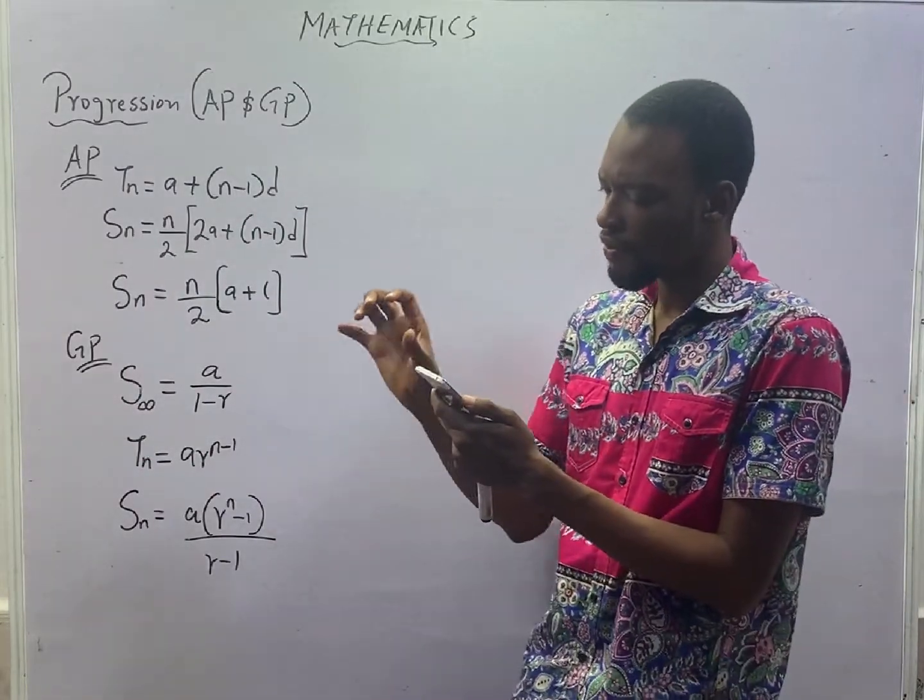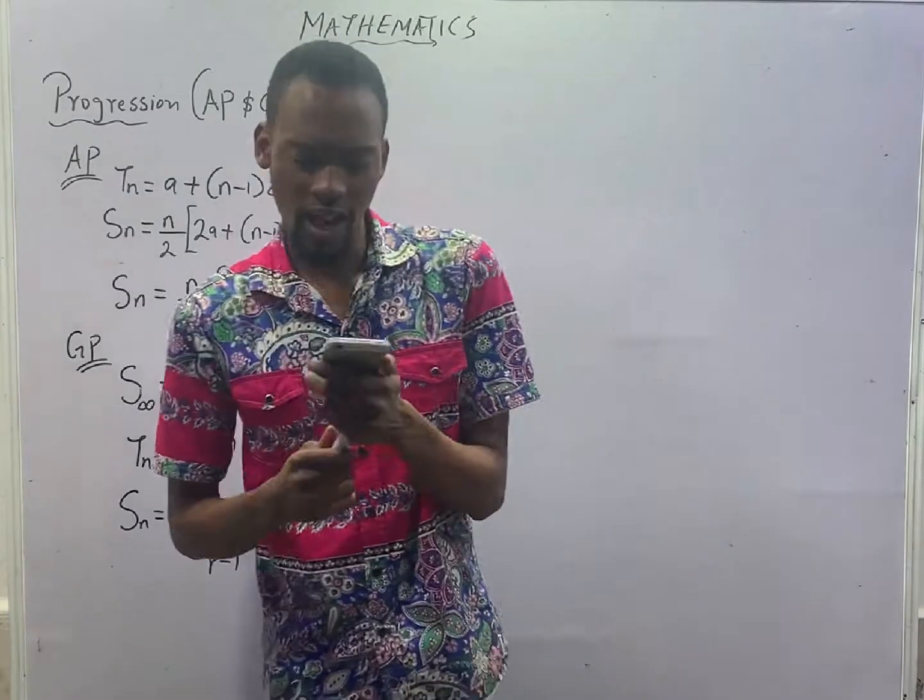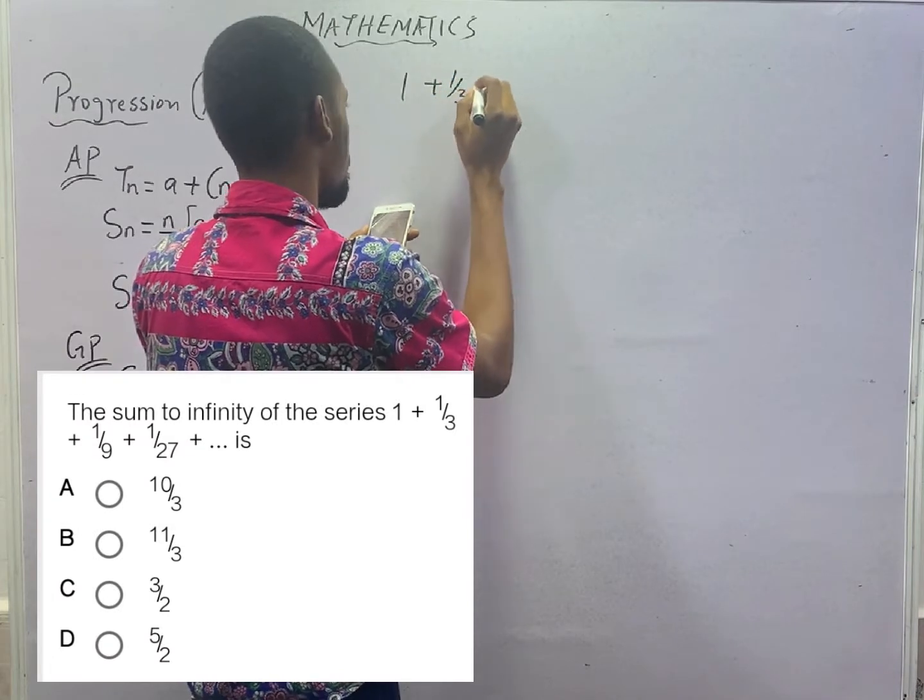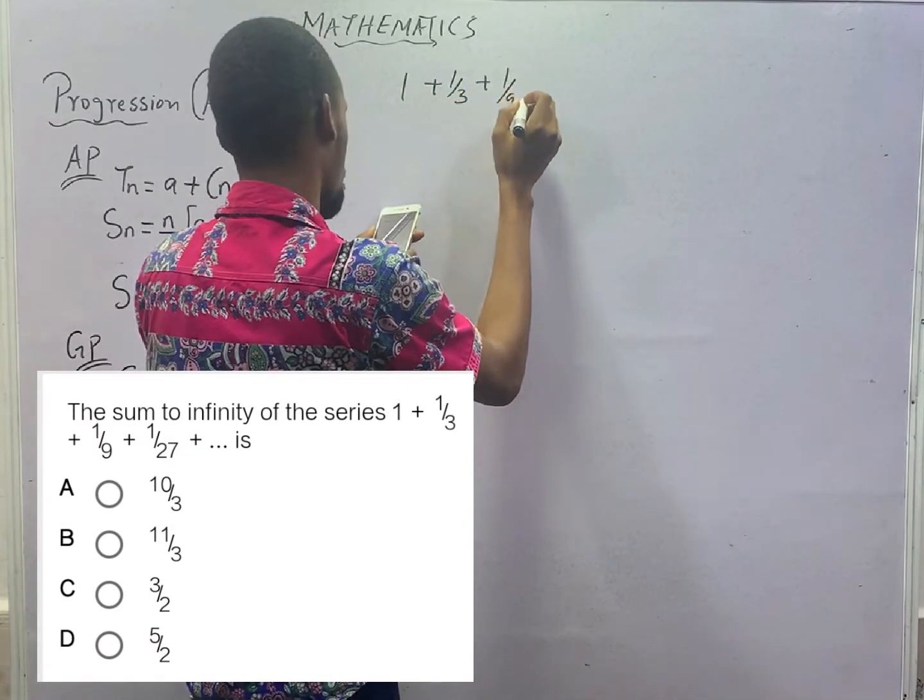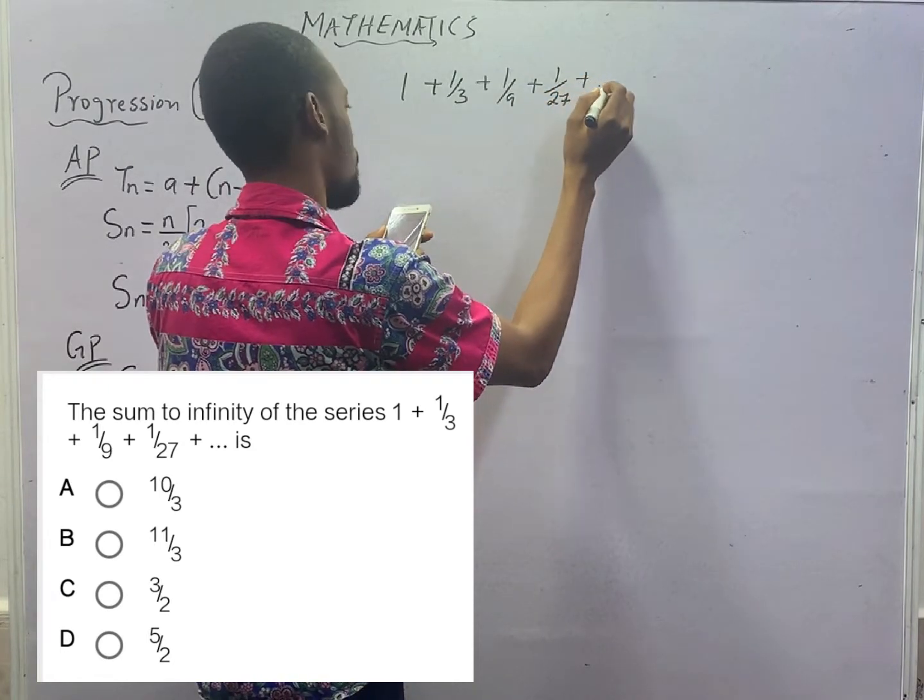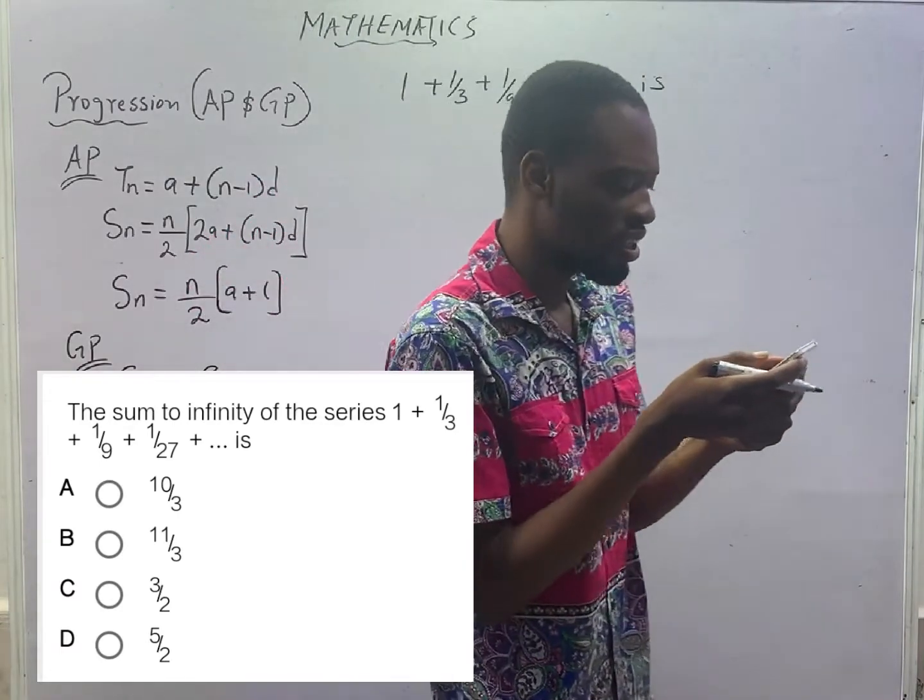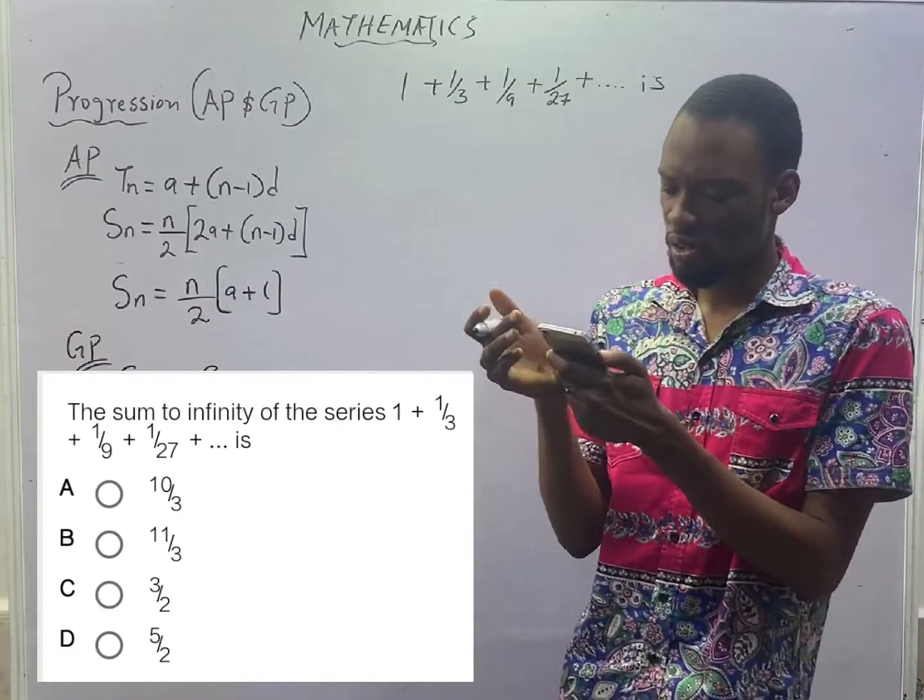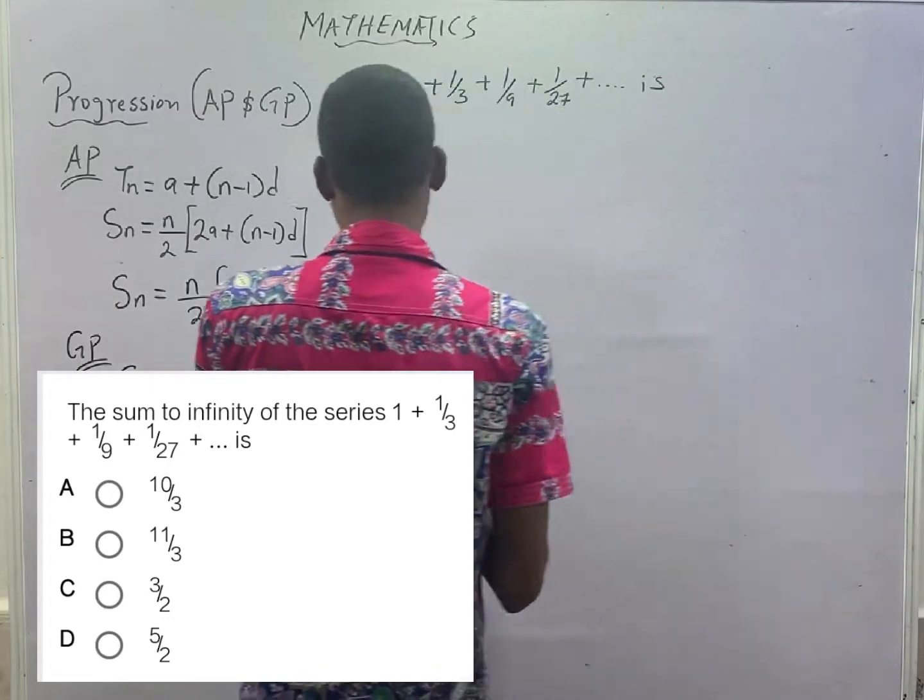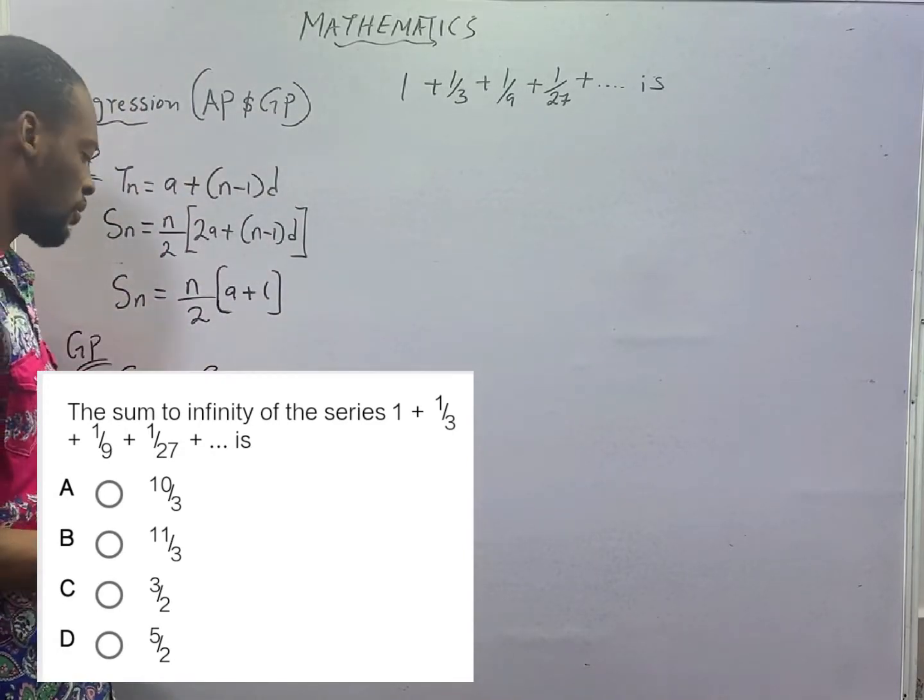The first question here is: the sum to infinity of the series 1 plus 1/3 plus 1/9 plus 1/27 plus... is what? Ladies and gentlemen, no need to talk so much. Sum to infinity is A/(1-R). That is the formula.